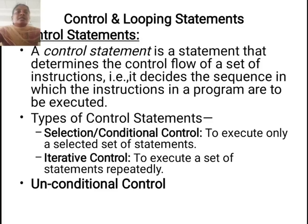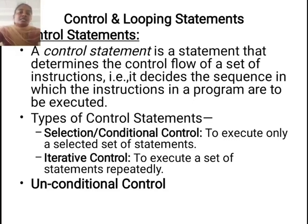Control and looping statements. The first one is control statement. A control statement is a statement that determines the control flow of a set of instructions. It decides the sequence in which the instructions in a program are to be executed. Next one is types of control statements. The first one is selection or conditional control, to execute only a selected set of statements.